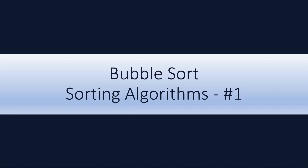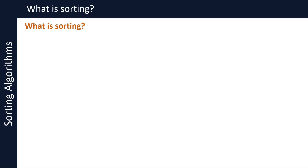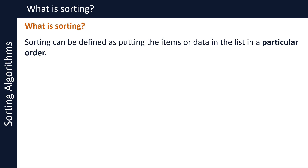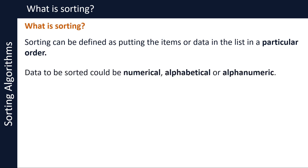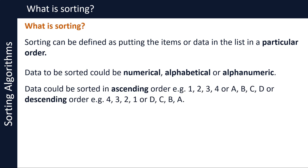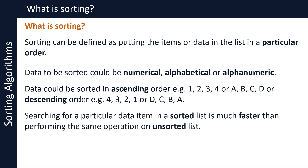In part one of this video series about sorting algorithms, we will take a look at the bubble sort algorithm. Sorting can be defined as putting the items or data in a list in a particular order. Data to be sorted could be numerical, alphabetical, or a combination of both — alphanumeric. Data could be sorted in ascending order, that is smallest to largest, for example 1 2 3 4 or A B C D, or descending order, that is largest to smallest, for example 4 3 2 1 or D C B A. Searching for a particular data item in a sorted list is much faster than performing the same operation on an unsorted list.